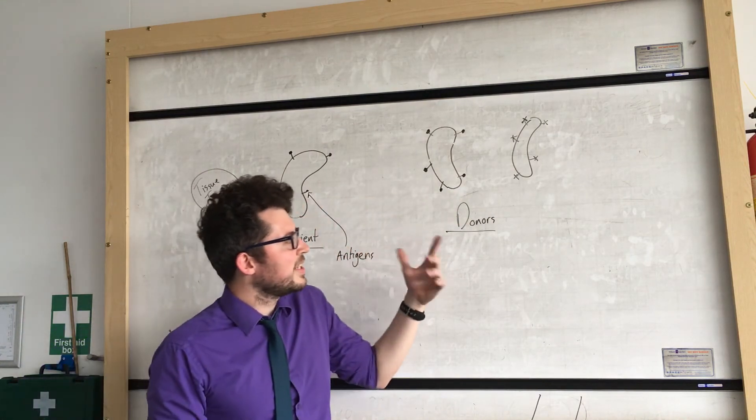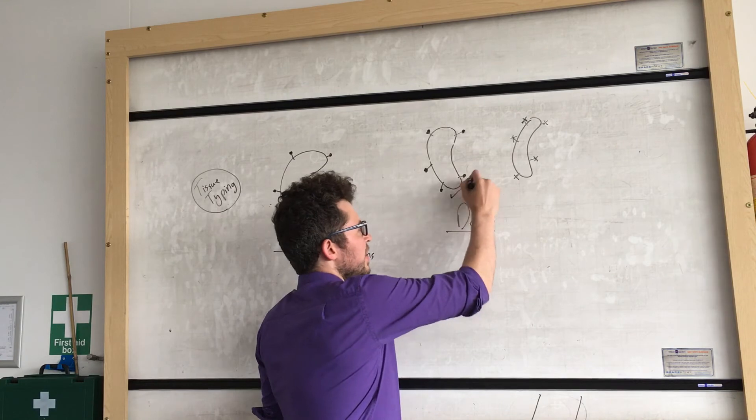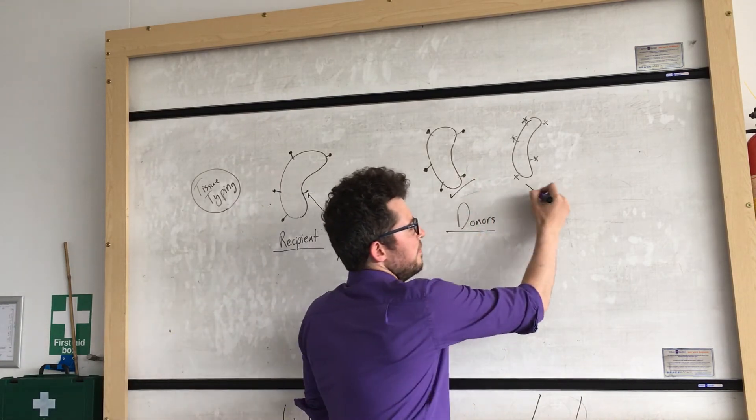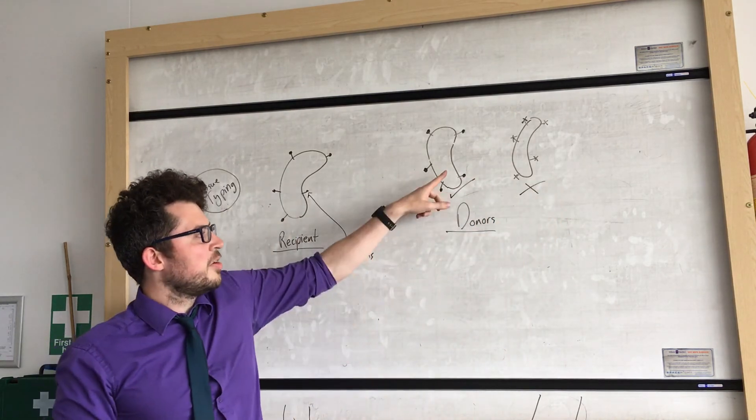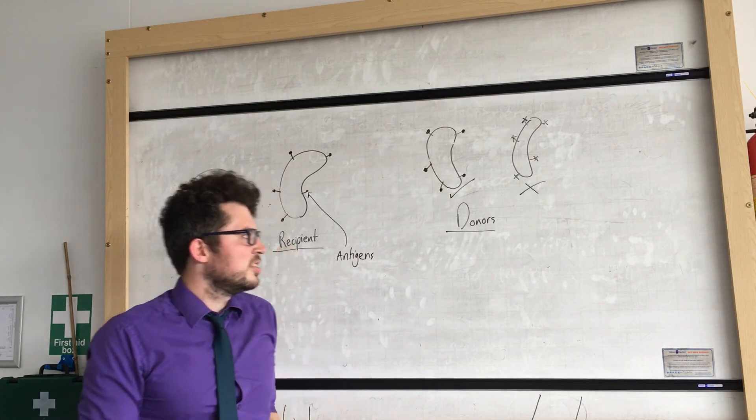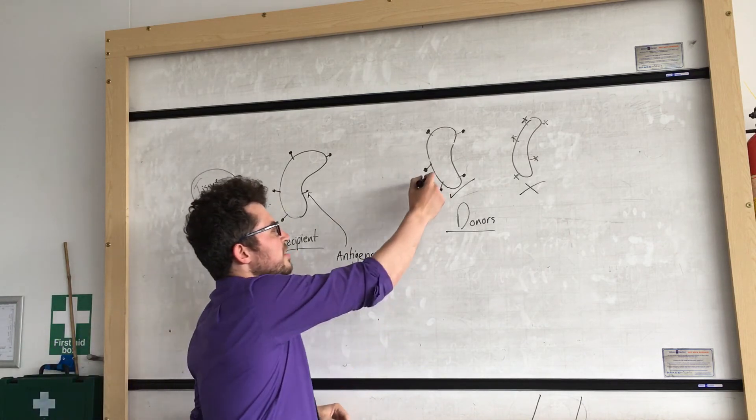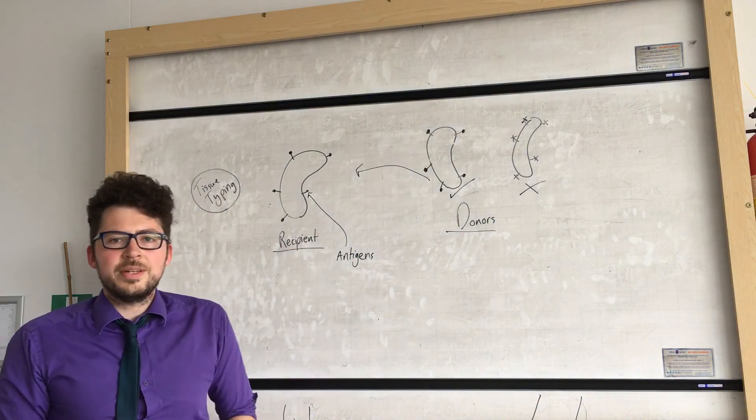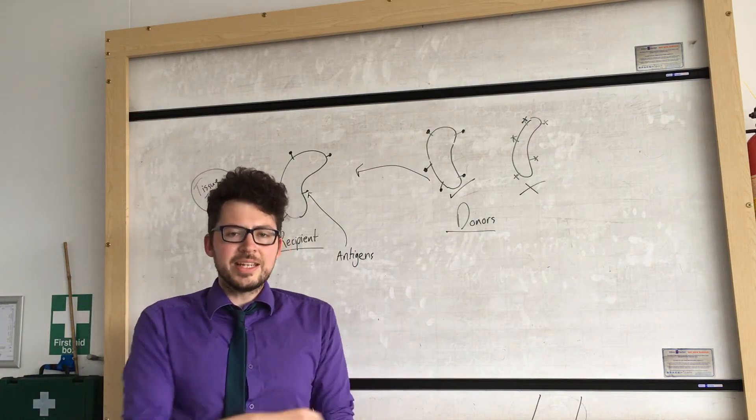So what we would do is we would obviously choose this donor and we wouldn't choose this donor because this donor has very similar antigens. Now this organ can then be transplanted into the body of the recipient giving them a functional kidney.